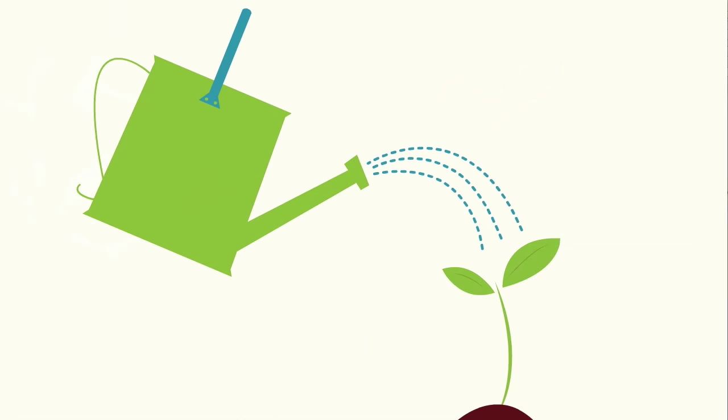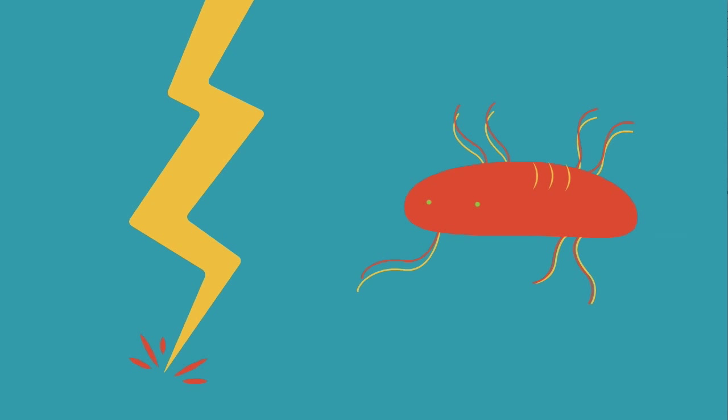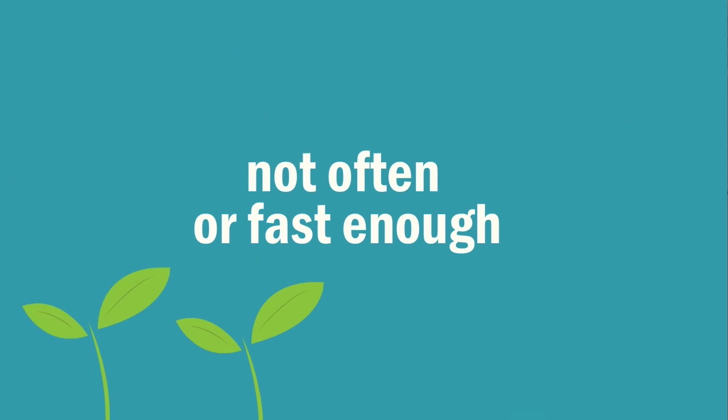Instead, it must be dissolved in water and absorbed through their roots. This is done naturally by lightning and by certain types of bacteria, though it does not happen often or fast enough to sustain crop growth and hence food production.